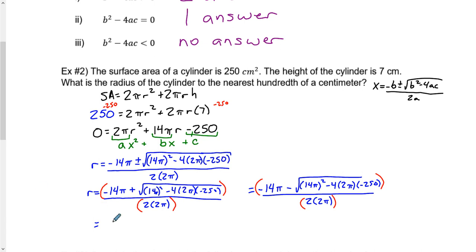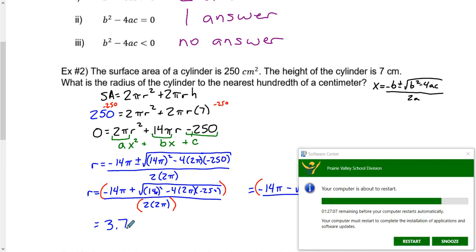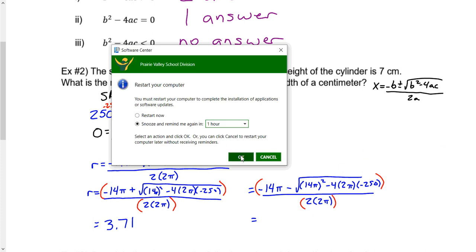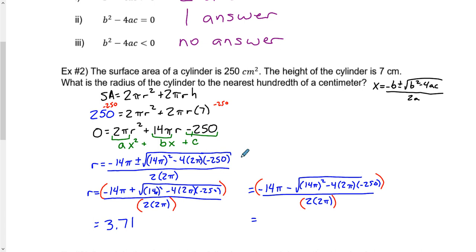To the nearest hundredth, maybe 3.71. If we type in negative 14π subtract, I can go straight up into my calculator and change that plus to subtraction. When I divide by 4π, I get negative 10.71.